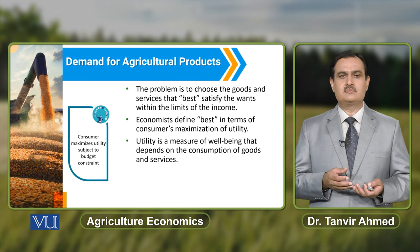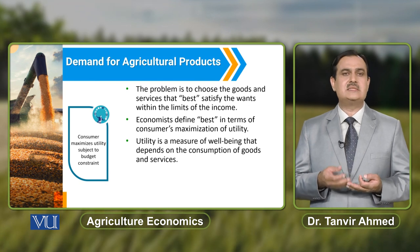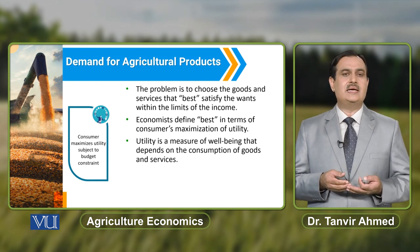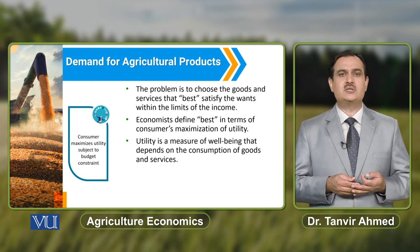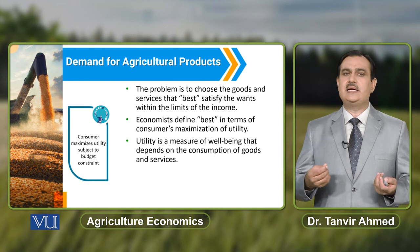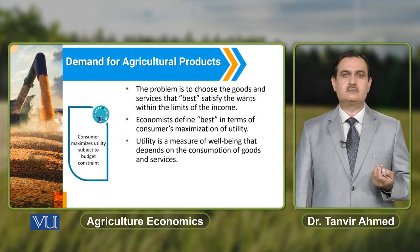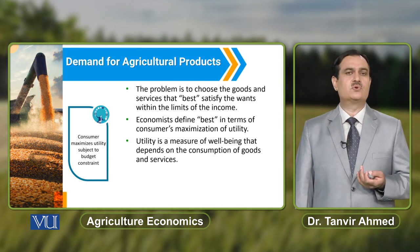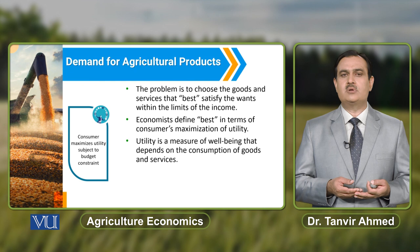When we say the consumer chooses the good that provides maximum satisfaction, the consumer is choosing the best combination available for consumption. That best combination is the combination where the consumer is getting maximum utility. Utility is a measure of well-being that depends upon the consumption of goods and services, and the consumption of goods and services depends upon the availability of resources to a particular consumer.